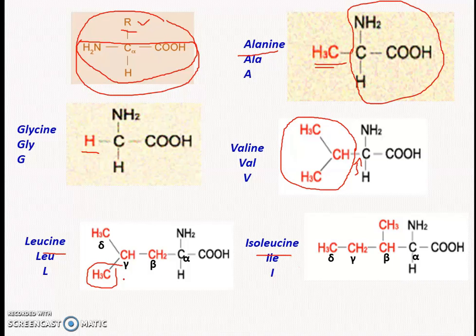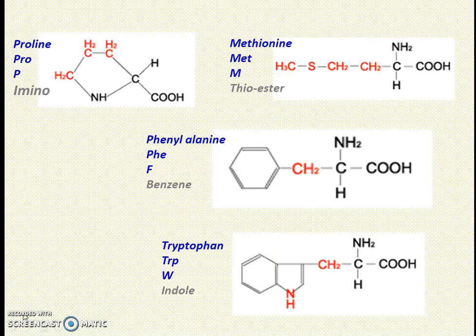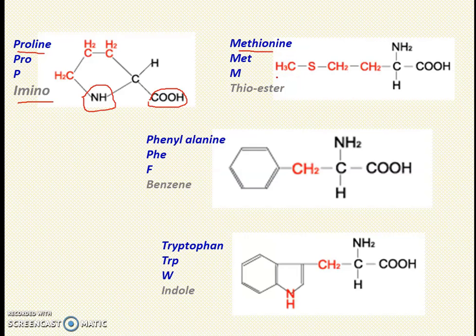When you know the structure of leucine you can write isoleucine: the methyl group in leucine is at the gamma carbon, whereas in isoleucine it is at the beta carbon. So if you learn alanine, it is easy to learn valine; from valine you can write leucine and isoleucine. Proline is heterocyclic with a pyrrole-like group containing CH2 groups but with a COOH replacing one hydrogen — proline contains an NH group, not a free amino group. Methionine has a side chain CH3–S–CH2–CH2– containing a thioether linkage.